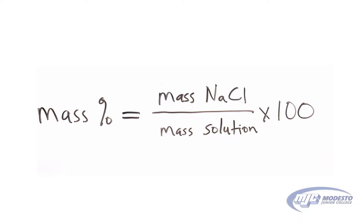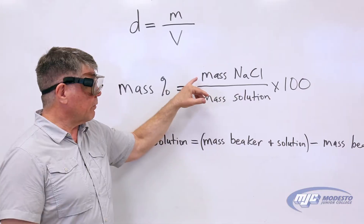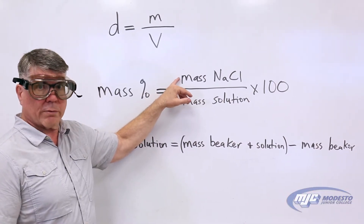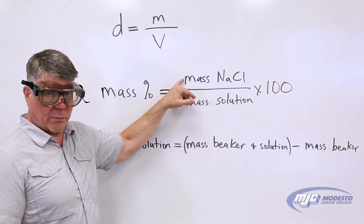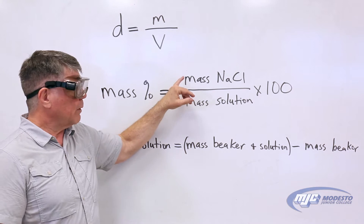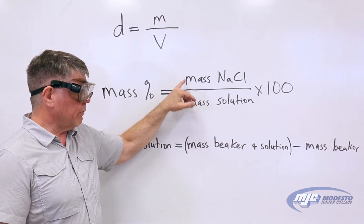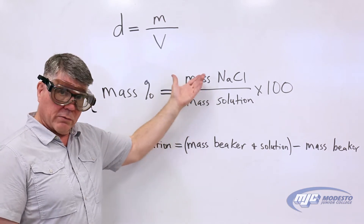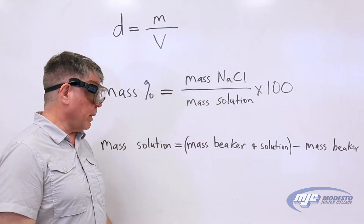Mass percent is the mass of the solute divided by the mass of the solution times 100. In this case the solute is sodium chloride. We're going to measure how much sodium chloride there is, the mass of it, and we're going to measure the mass of the solution, so that's going to be easy to get to.